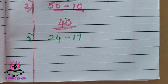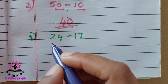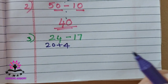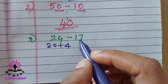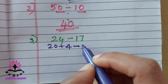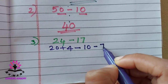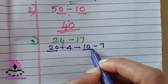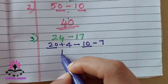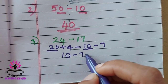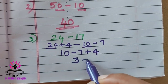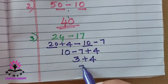See the next one: 24 minus 17. Write 24 as 20 plus 4, and 17 as 10 plus 7. Since there is a minus sign, it becomes minus 10 minus 7. Now, 20 minus 10 is 10. Then there is minus 7 plus 4: 10 minus 7 is 3, plus 4 as it is. So the answer is 7.